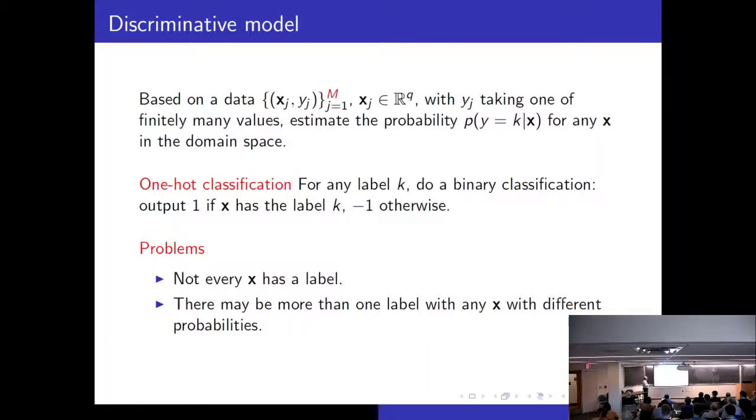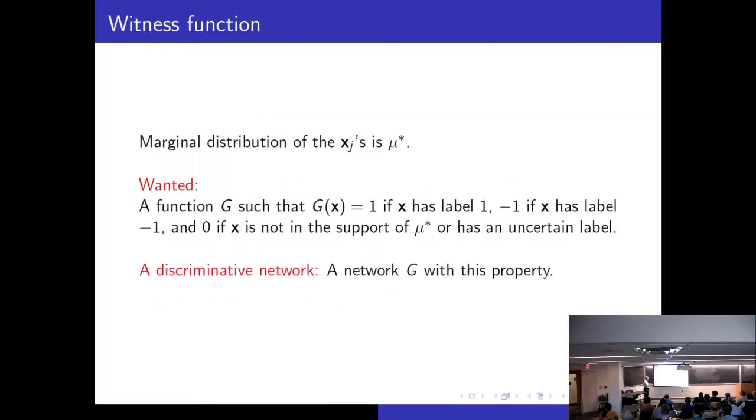The thing is this X is now everywhere in this R to the Q. And so it could happen that the X does not have a label. And it could be that there could be more than one label for any X. So these are the problems which we want to figure out. Does this X have a label? And can it have more than one label? Then which one should we pick?